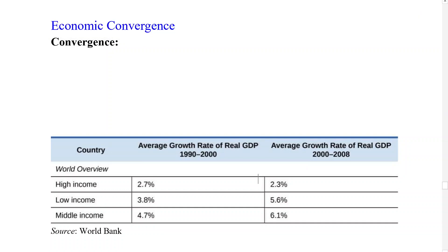Hello everyone, welcome back. This is the final video in our series on economic growth. In the last video we were looking at why some countries grow faster and slower than others, and we're going to continue with that idea here in this video on economic convergence. What we see is a phenomenon where lower- and middle-income countries grow faster than higher-income countries, which we can see in this table — high-income countries with growth rates around 2%, and low- and middle-income countries up closer to around 6%.